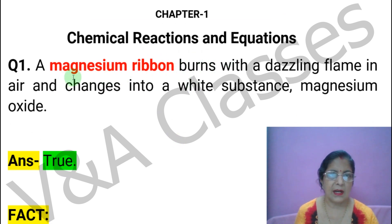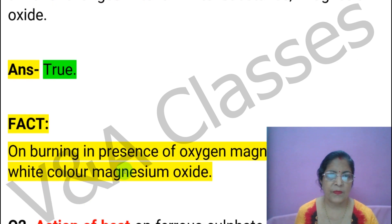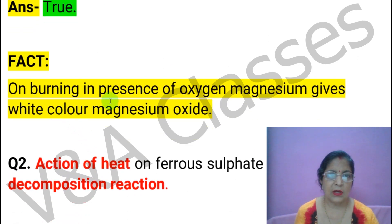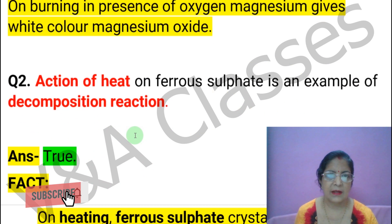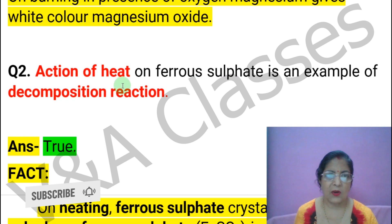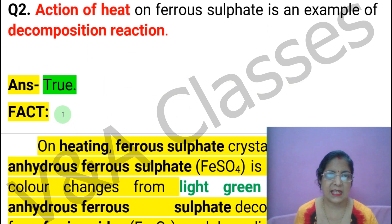Statement: A magnesium ribbon burns with a dazzling flame in air and changes into a white substance, magnesium oxide. This statement is TRUE. The fact is: on burning in the presence of oxygen, magnesium gives white-colored magnesium oxide. Next statement: The action of heat on ferrous sulfate is an example of a decomposition reaction. This statement is TRUE.